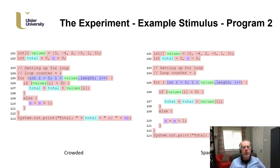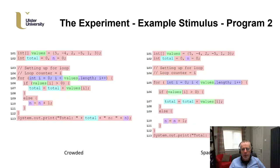Looking in a bit more detail at how we differentiated between a spaced and a crowded program — and there could be a lot of debate around this — rather than going for extremes of crowding and spacing, we tried to have distinctions which were realistic and might be found in real-world coding. We introduced spacing primarily through vertical spacing between lines of code or between logical groupings of code. The slide also highlights our areas of interest.